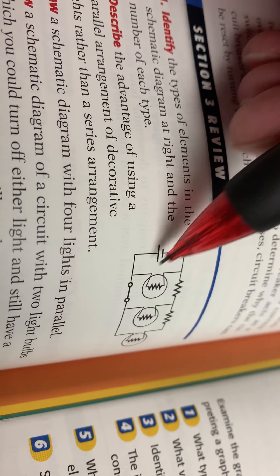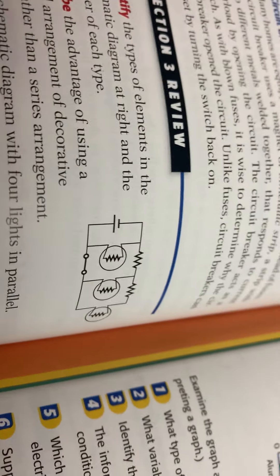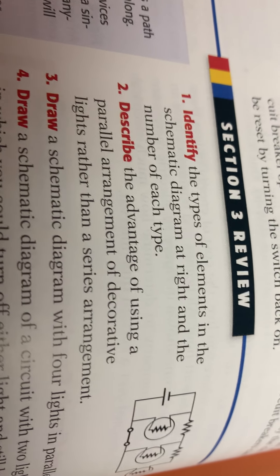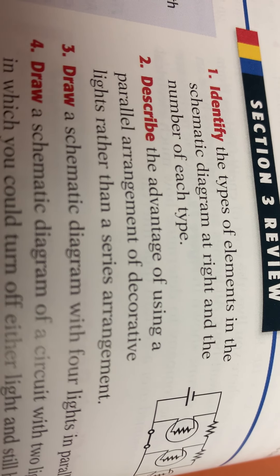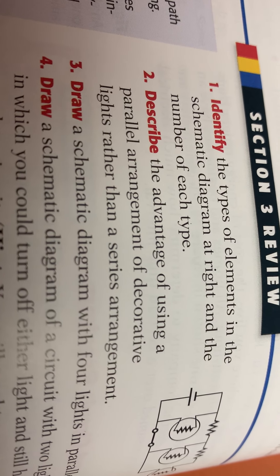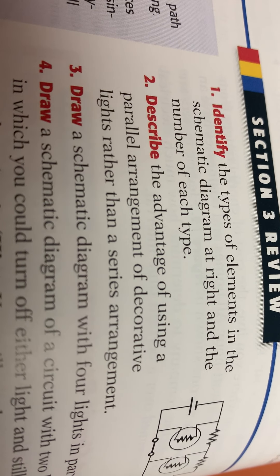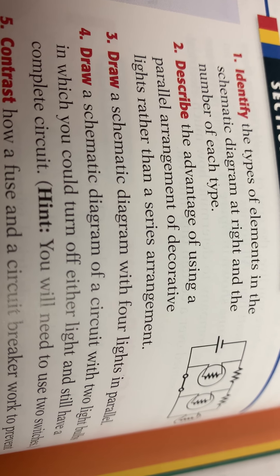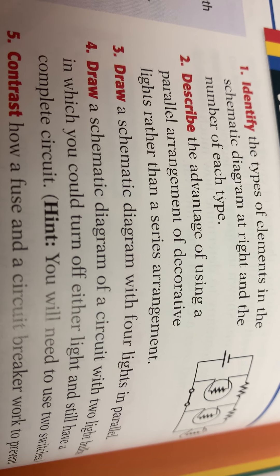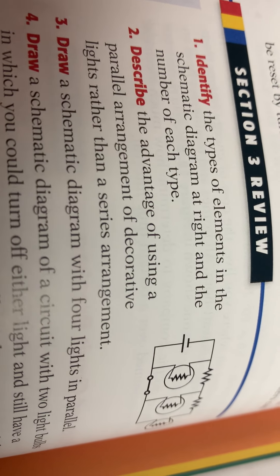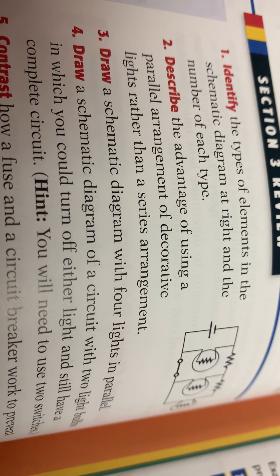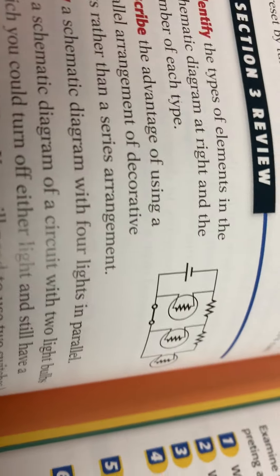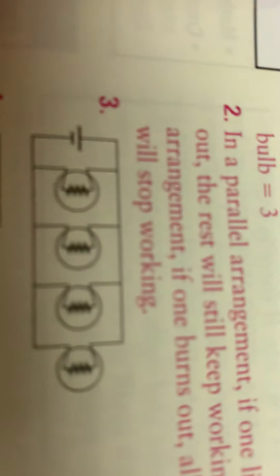One battery, one switch, two resistors, three light bulbs. Describe the advantage of using a parallel arrangement for decorative lights rather than series. In parallel, if one bulb goes out, only that bulb is done, the lights still go. If you use series, if one bulb goes out the entire strand of lights will not work, and if you want to take the time to check every bulb, go for it. Draw a schematic diagram with four lights and then draw a schematic diagram with two lights that you could turn off either or to have a complete circuit. I will show you those right here, there's number three, four lights.